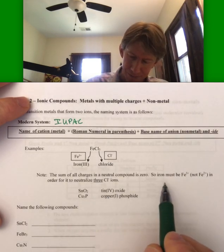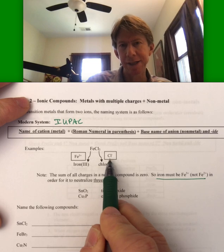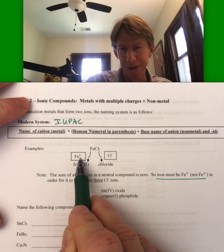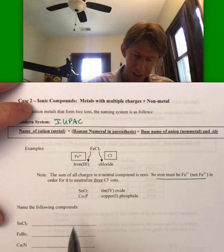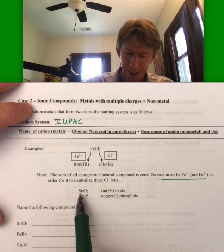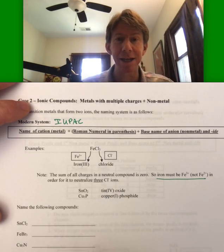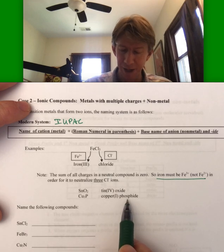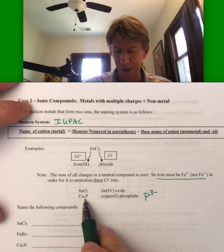This must be iron(III) because we know that chloride is minus one, and it takes three chlorides to balance one iron — that iron must be plus three. For tin, it could be tin(II) or tin(IV); it's tin(IV) because there are two oxygens, each an oxide ion with two times two being minus four. Here's copper — phosphide is three minus, so to balance them we need three copper ones.